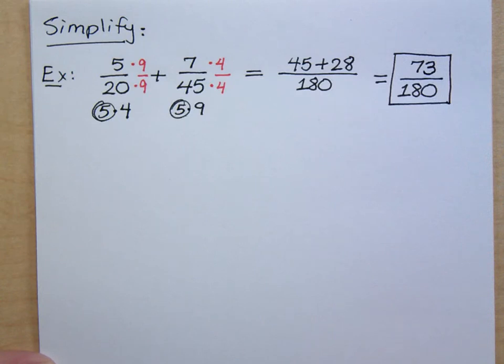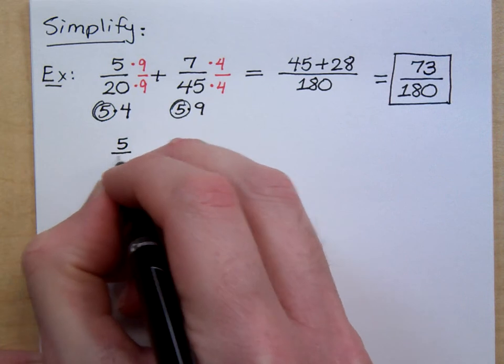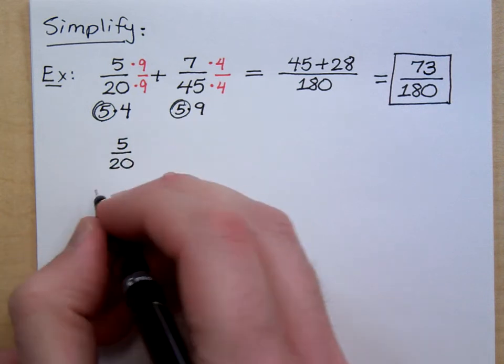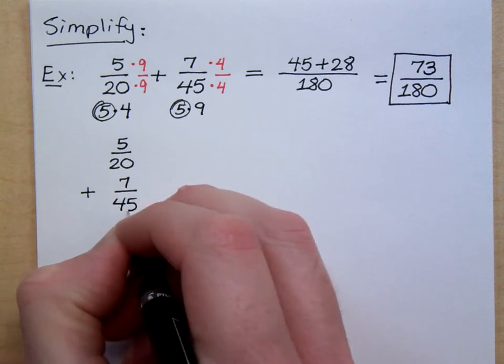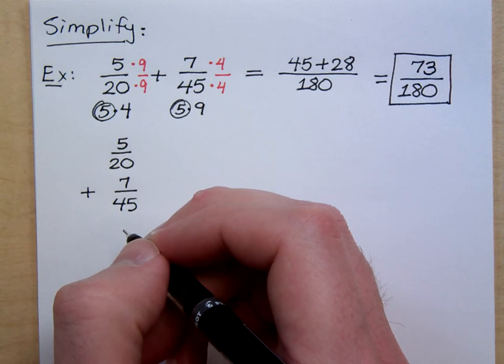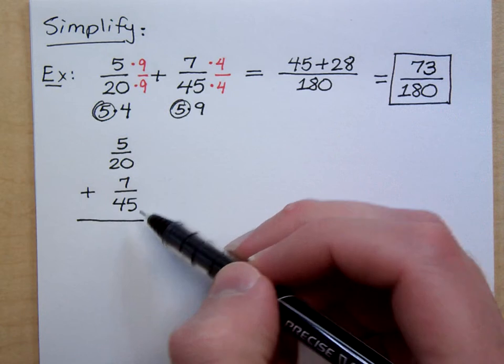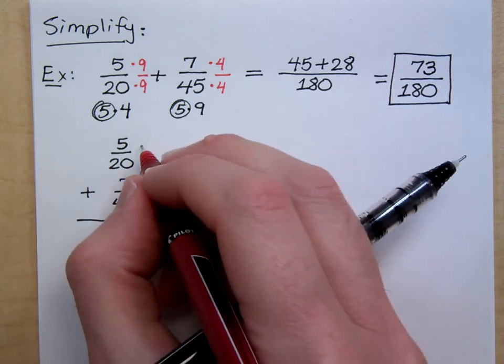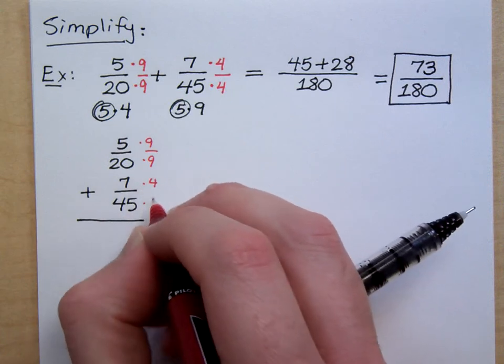Any questions about that? I mean, you didn't have to do it this way, but I think this is probably the best way of doing it. Some of you may prefer writing this more in a column format, and we'll be doing that a little bit later today. You have 5 over 20 plus 7 over 45. The goal here, the most important thing is, can you get a common denominator?